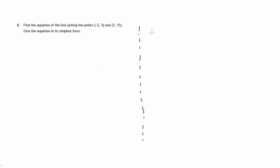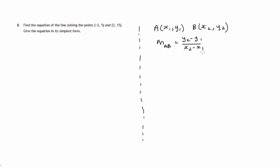Let's gather some facts before we do this. If we have two points and we know their coordinates, then the gradient of the line joining these two points will be the y difference over the x difference. Also, we know that the equation of a straight line has either this form: y equals mx plus c, where m is the gradient and c is where it crosses the y axis.